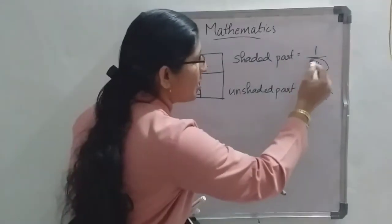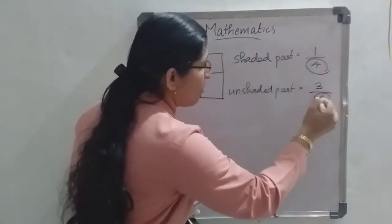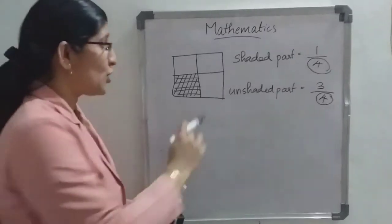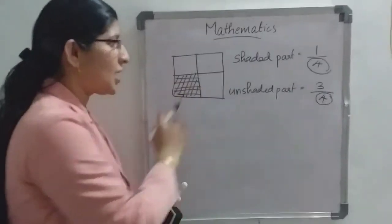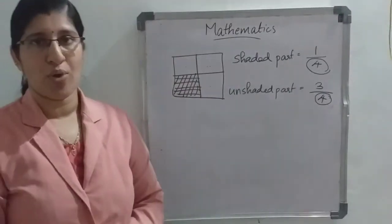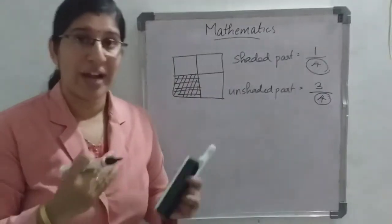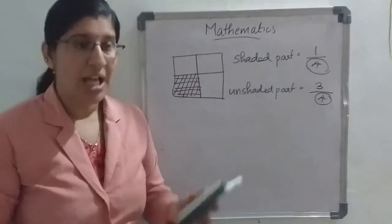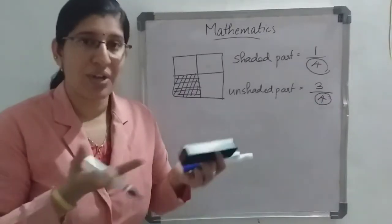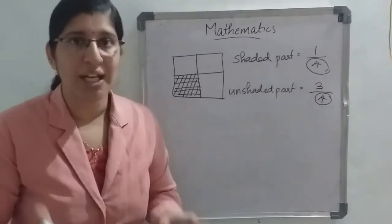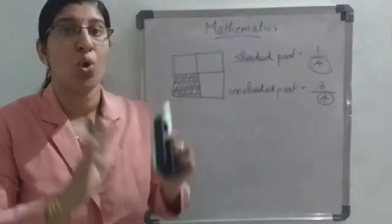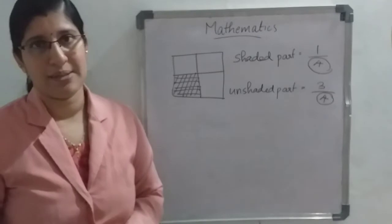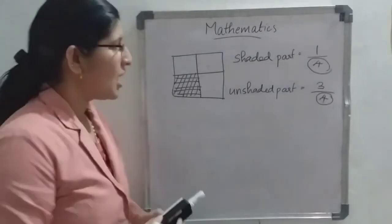In both fractions, 4 is common. What is that 4? It is the total number of equal parts. So whenever you are writing a fraction, the number written below the line should always be the total number of equal parts.